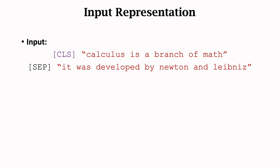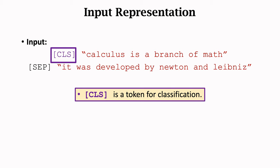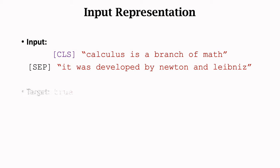We concatenate two sentences: calculus is a branch of math, and it was developed by Newton and Leibniz. We use a token CLS for classification. I will explain it later on. We use a token SEP for separating sentences. We just place the tokens here. The embedding layer will convert each token to a vector. The vectors will be automatically learned. We know the second sentence is the real next sentence. So we set its target to TRUE. We hope the classification output is TRUE.